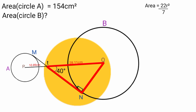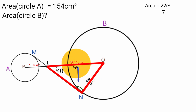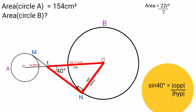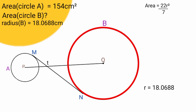Back to this triangle for circle B. Since it is a right angle triangle, from this angle here the radius is opposite, and line QT is the hypotenuse because it faces the right angle. Using SOH-CAH-TOA: sin theta equals opposite over hypotenuse; theta is 40 degrees, opposite is the radius R, and hypotenuse equals 28.11 cm. So sin 40 degrees equals R over 28.11. Making R the subject: R equals sin 40 degrees times 28.11, which equals 18.0688 cm. So the radius of circle B is 18.0688 cm.